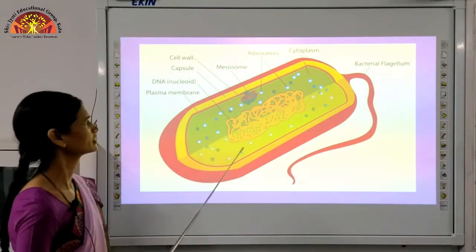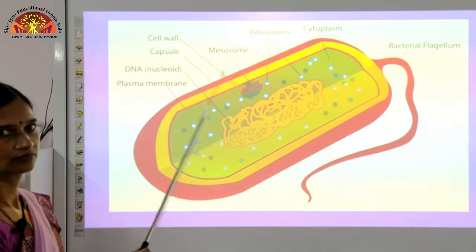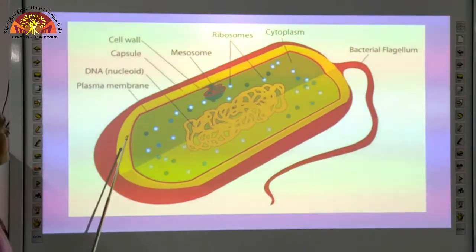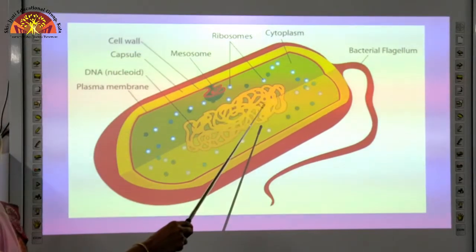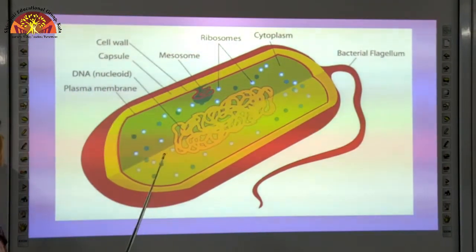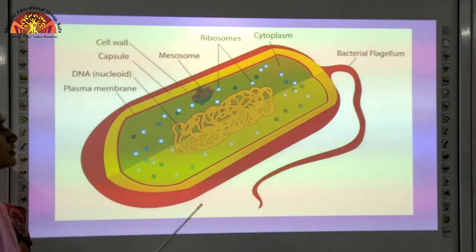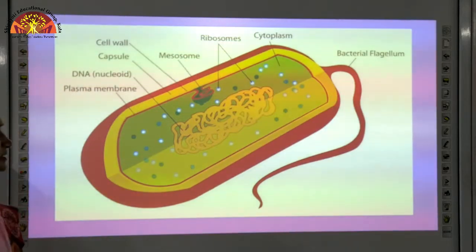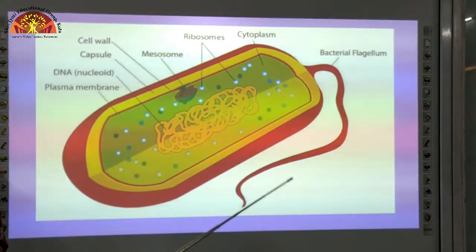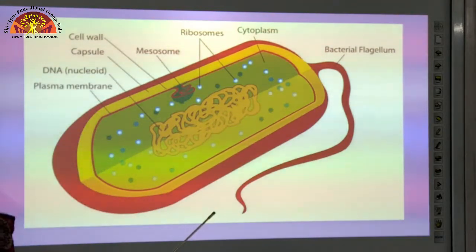Now you can see the picture of the prokaryotic cell on your screen. Looking at the structure: the outermost is the cell wall, then the capsule. There is no well-defined nucleus — all the genetic material is spread into the cell. Then plasma membrane is present. Ribosomes are there, and other than ribosomes, no cell organelles are present. There is also a flagellum — the bacterial flagellum — for movement of the cell.